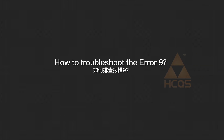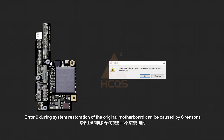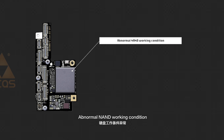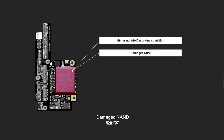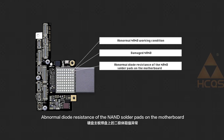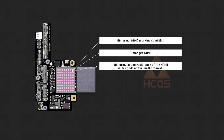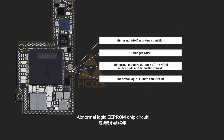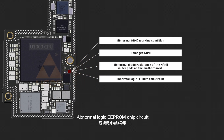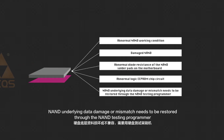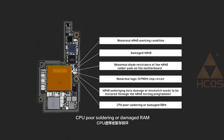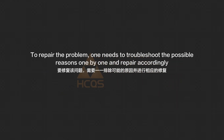How to troubleshoot error 9? Error 9 during system restoration of the original motherboard can be caused by 6 reasons: abnormal NAD working condition, damaged NAD, abnormal die resistance of the NAD solder pads on the motherboard, abnormal logic EEPROM chip circuit, NAD underlying data damage or mismatch needing restoration through the NAD testing programmer, and CPU poor soldering or damaged RAM. To repair the problem, one needs to troubleshoot the possible reasons one by one and repair accordingly.